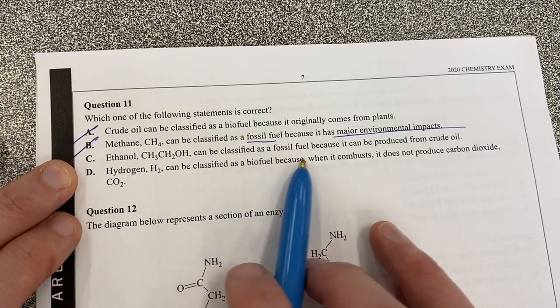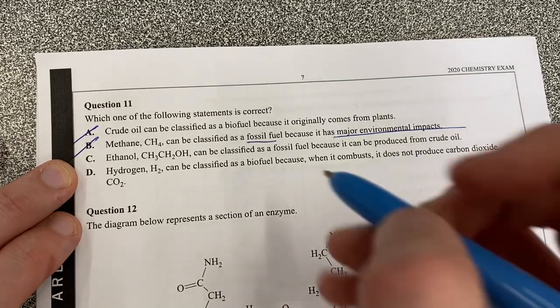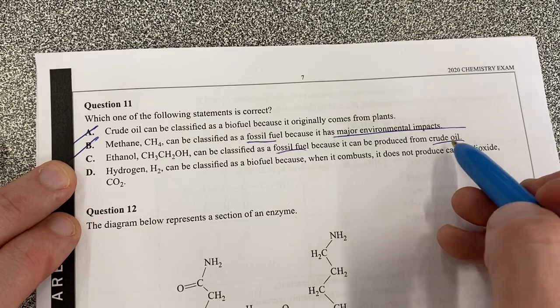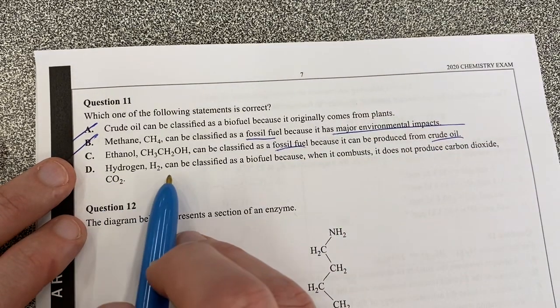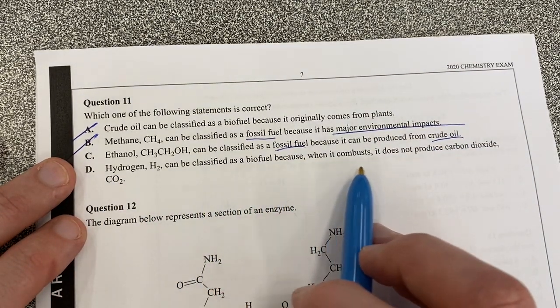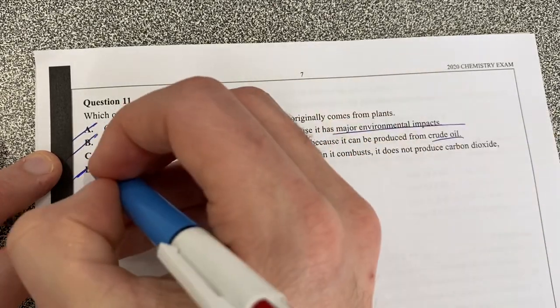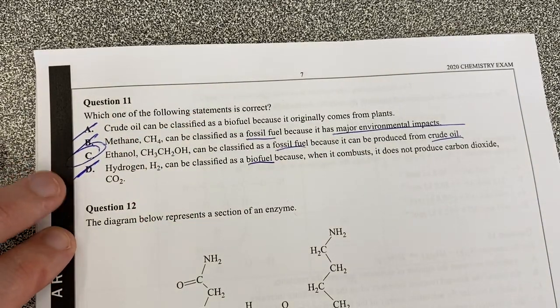Ethanol can be classified as a fossil fuel because it can be produced from crude oil. Fossil fuels and crude oil is pretty good. Ethanol probably can be done that but let's have a look what the next one is. Hydrogen can be classified as a biofuel because when it combusts it does not produce carbon dioxide. That is not true. Biofuels come from plants. So C is our best answer for this question.